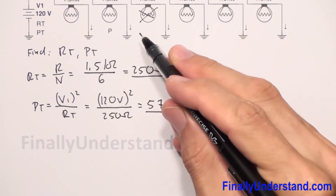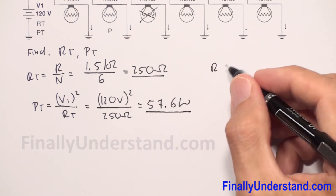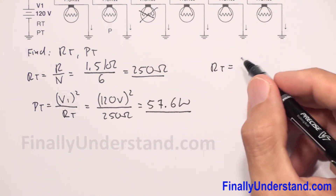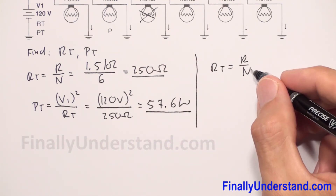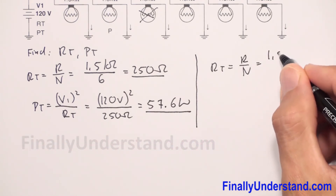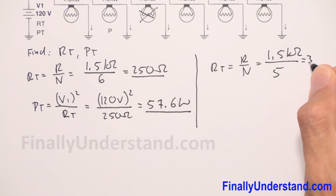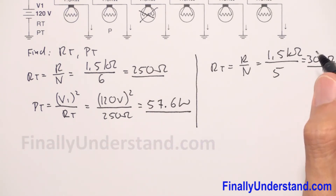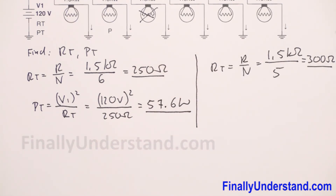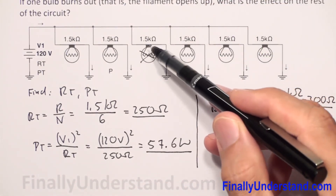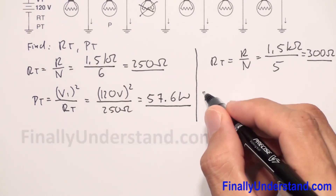Let's check what happens to resistance. R total equals R over n, but now I don't have six bulbs — I have just five. So 1.5 kilohms divided by five equals 300 ohms. As you can see, when one bulb burns, the total resistance of the circuit increases because there are fewer components connected in parallel.